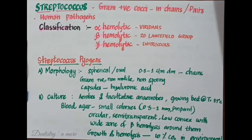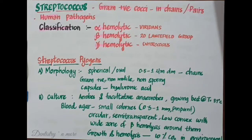Alpha hemolytic Streptococci produce a greenish discoloration around the colonies due to partial hemolysis. The zone of hemolysis will be very small and there will be unlysed erythrocytes that are detectable microscopically. Alpha hemolysis is seen in the viridans category.